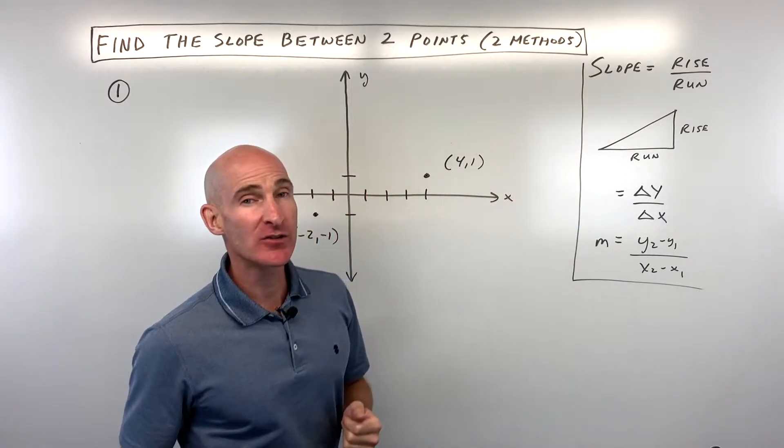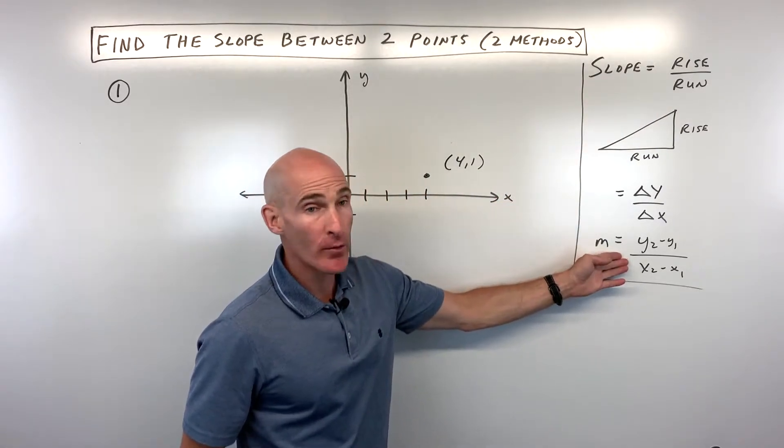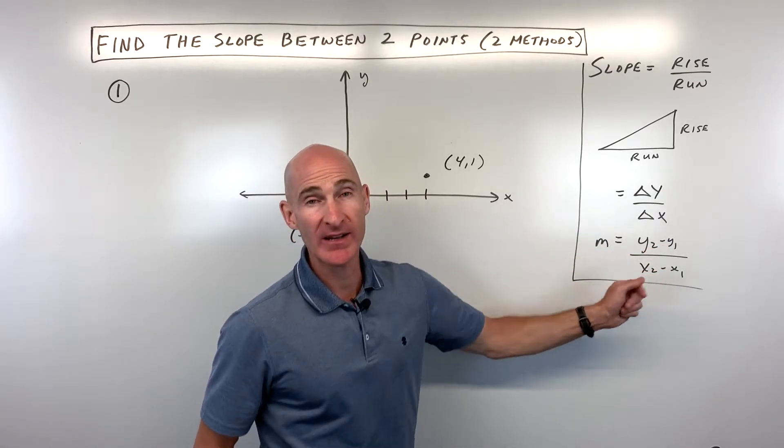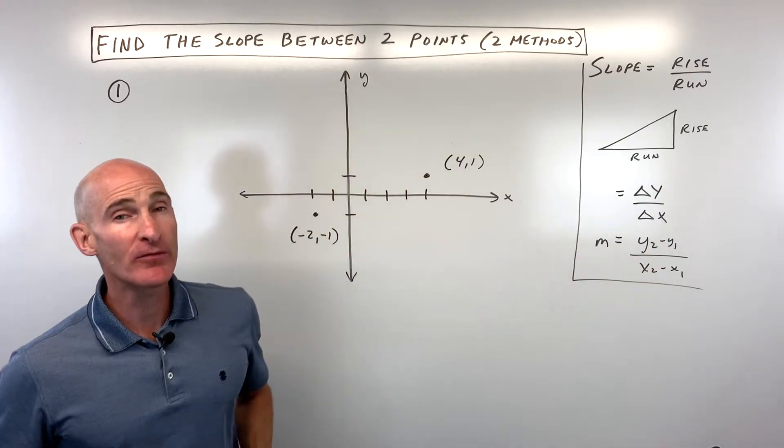We're also going to talk about how to find the slope using this slope formula y2 minus y1 over x2 minus x1. We're going to go through two different examples.